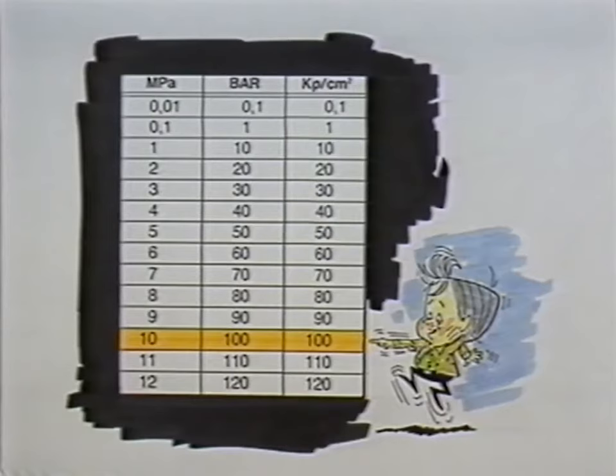The table shows the differences between these units. The figures given on the same line correspond to each other. If we look at the colored line, we will see that 1.510 MPa corresponds to 100 bar or 100 KGP per square centimeter.